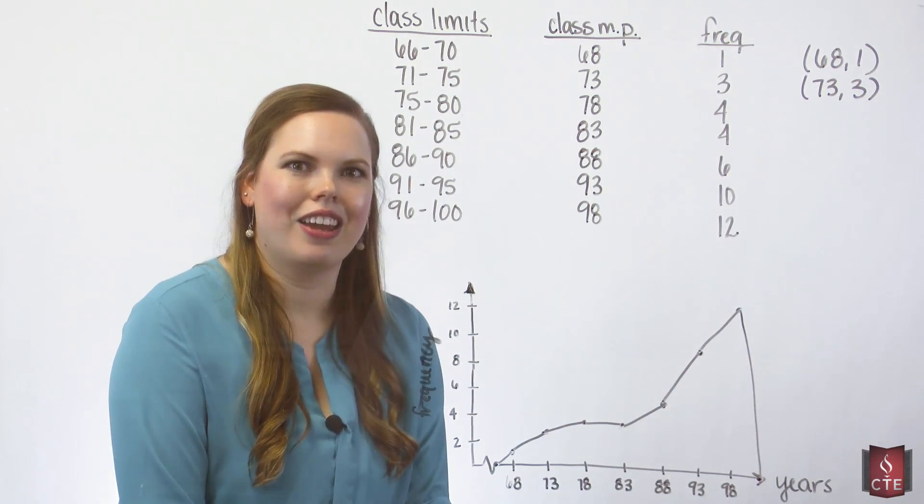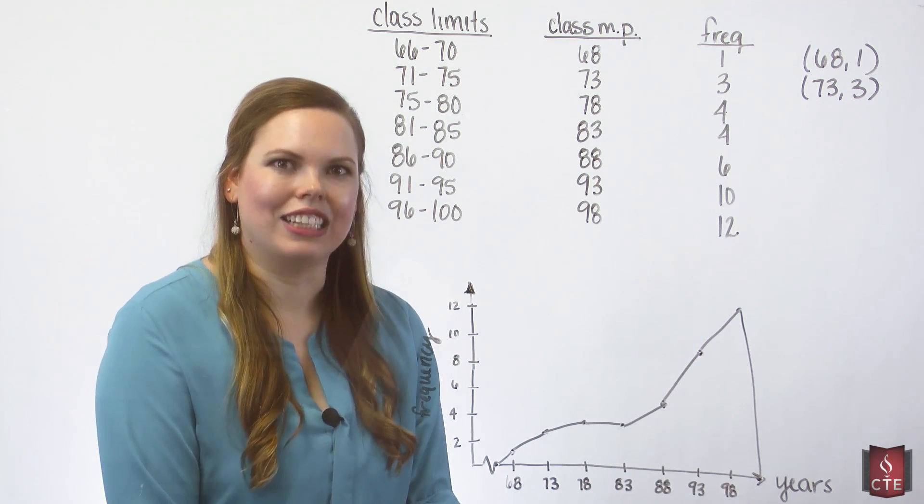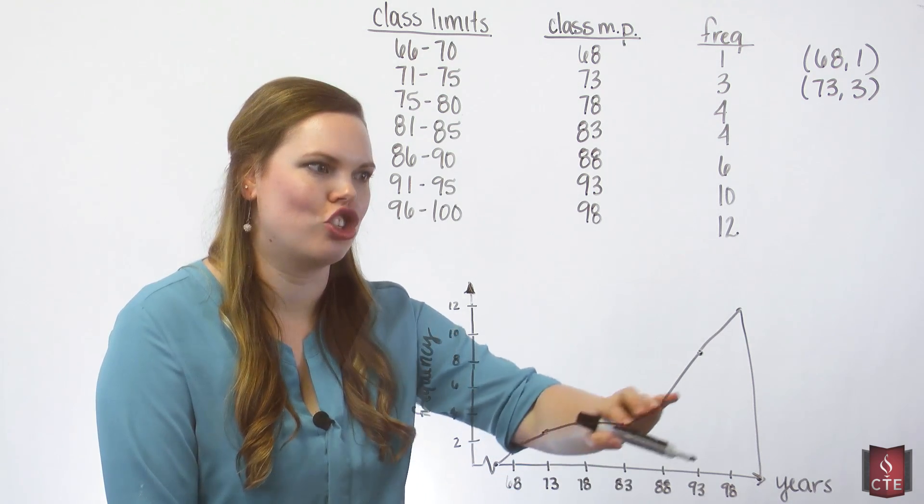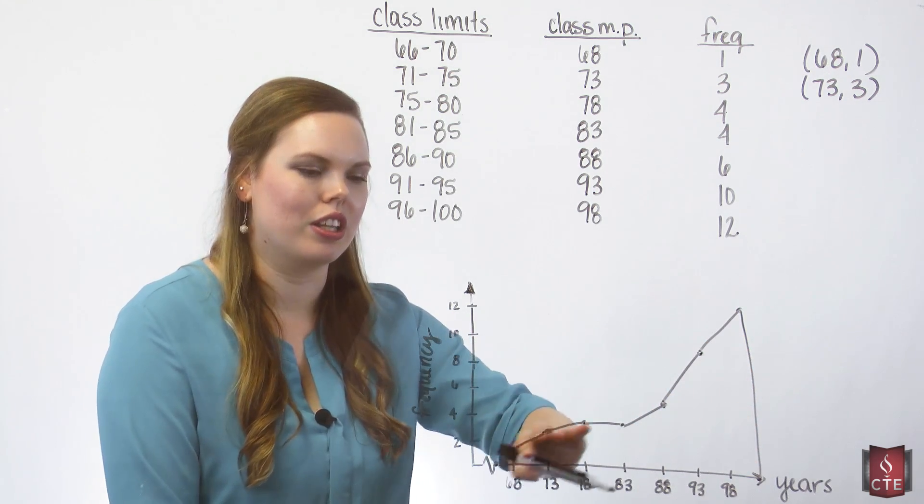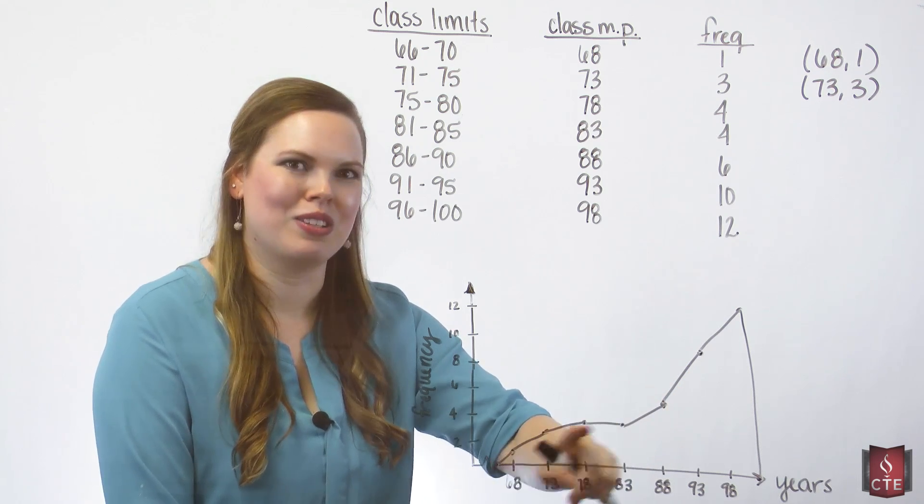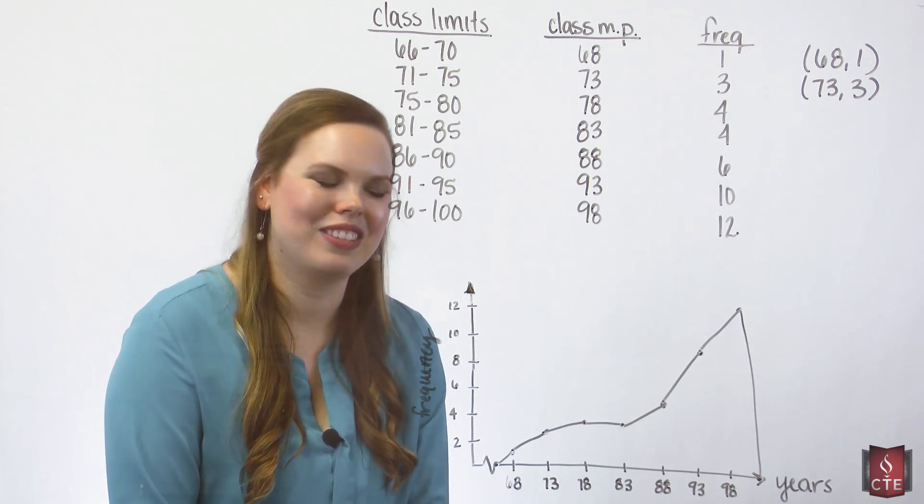And that just closes it off. And now we have this polygon form, which is a line segmented shape. And I really like polygons because you can see the shape of the graph. So you can really see here that this graph is skewed to the left. We always talk about skewness with the tail. So this one's skewed to the left.